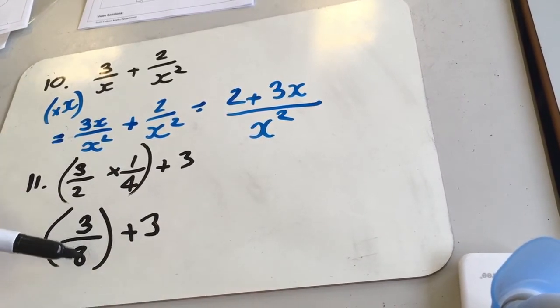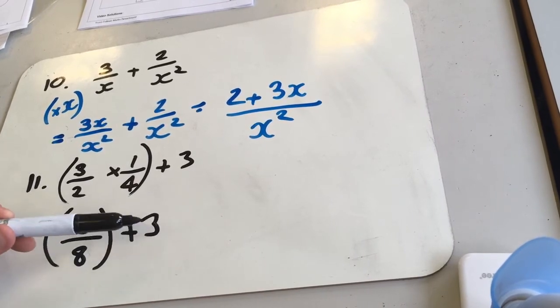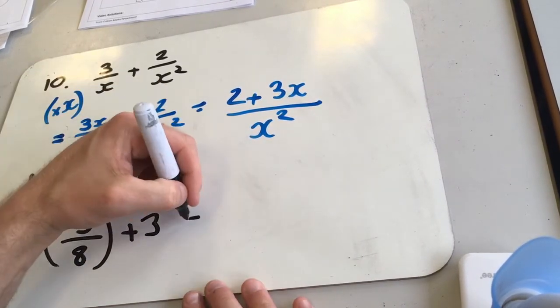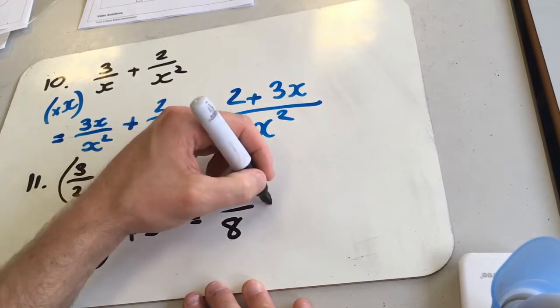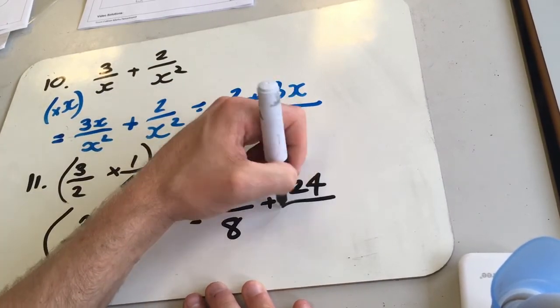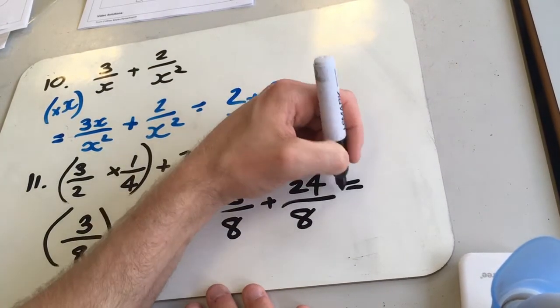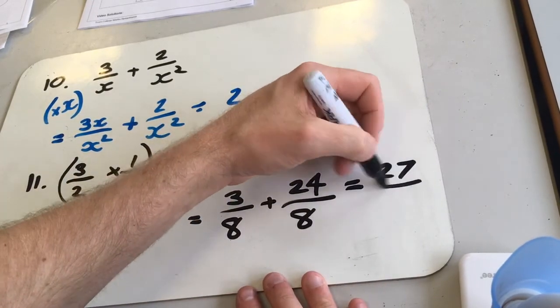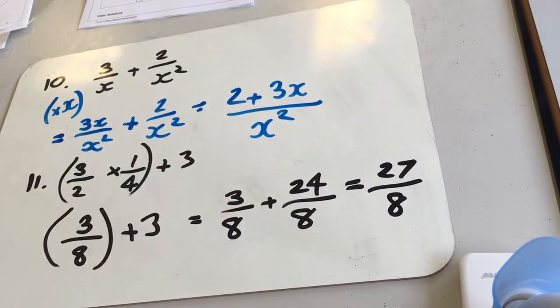So the denominator of 8 would be good. So if we times this fraction by 8 over 8, we're going to get 3 over 8 plus 24 over 8, which gives me 27 over 8.